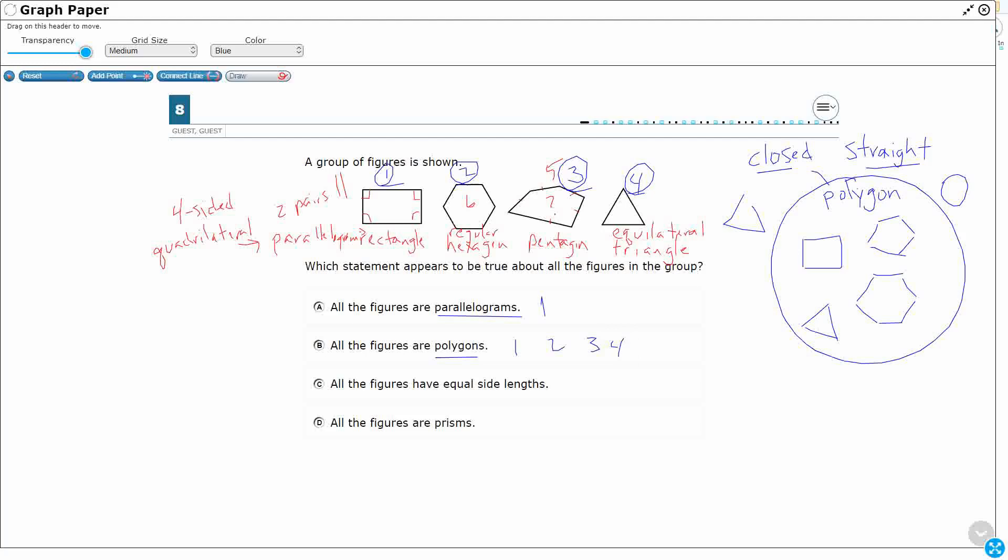Let's check C and D. All the figures have equal side lengths. Actually, the hexagon looks like it's got equal side lengths. So that's shape two. And then so does shape four, but only two of them do. My regular hexagon has got six equal sides and my equilateral triangle has got three equal sides. That works.